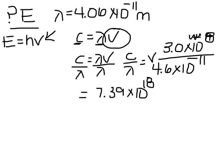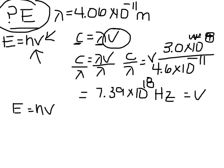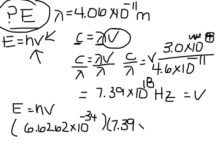Now some of you are going to get in a hurry, put hertz here, circle it, and think you're done. But that's not what the question asks you. You have to go back to the question stem. What is the energy? So now we have V and we can plug it back into this equation. E equals h times V. Plug in what we know: 6.6262 times 10 to the negative 34th times 7.39 times 10 to the 18th, which is our frequency.